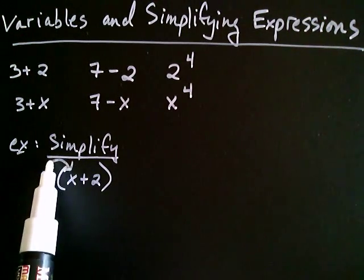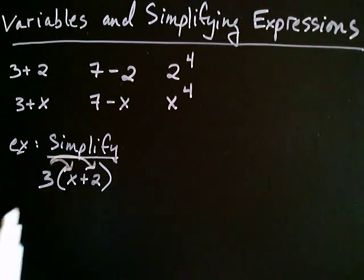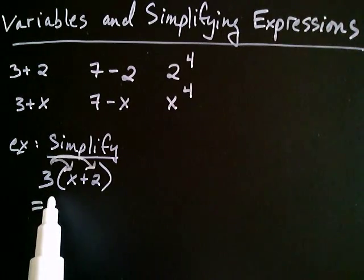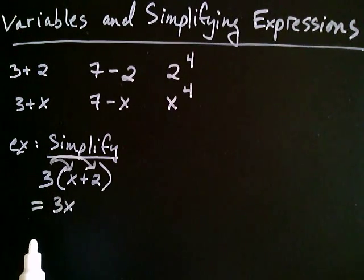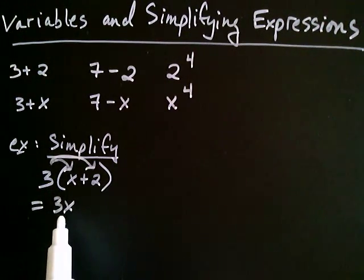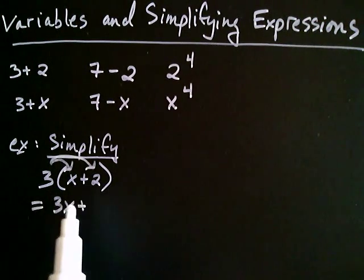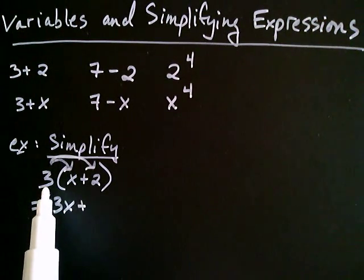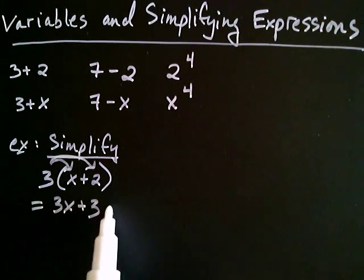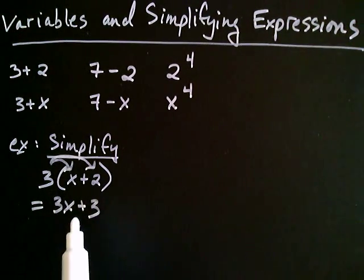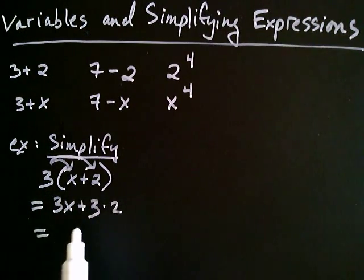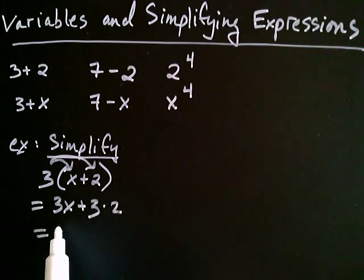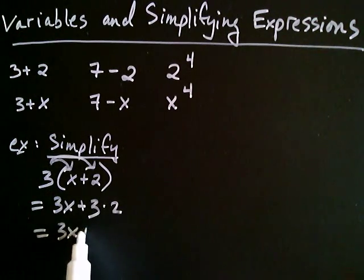Three gets multiplied by x and then three gets multiplied by two. So this becomes three times x, which is just 3x — we don't put the dot there because there's no possibility of confusion. And then plus, now I should put the dot, because if I just write this with just a two everybody's going to think I mean 32. But I mean three multiplied by two, and three multiplied by two is six. So I get 3x plus 6.